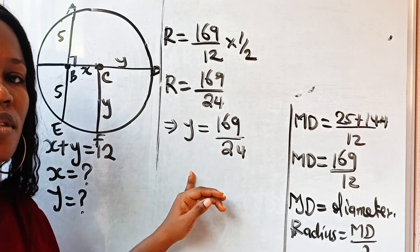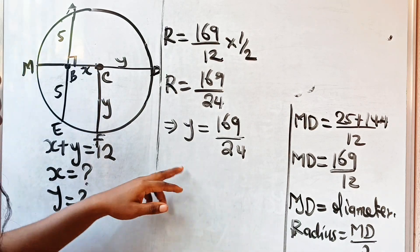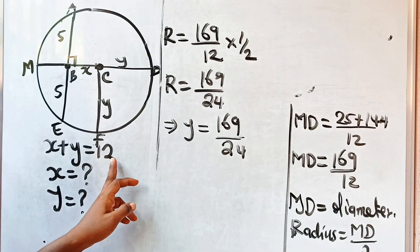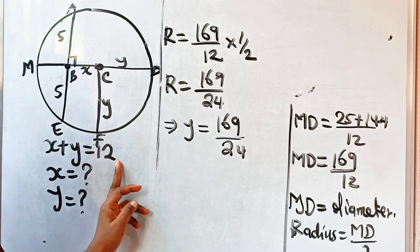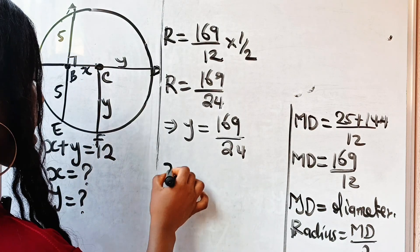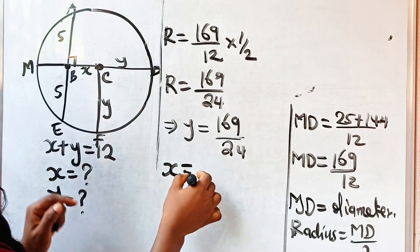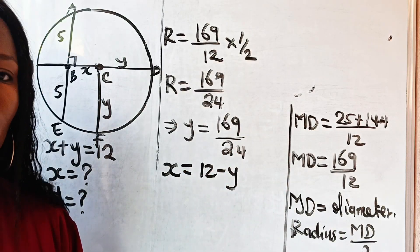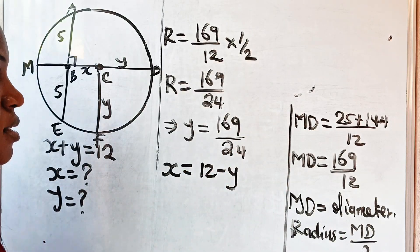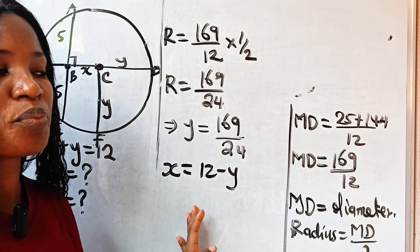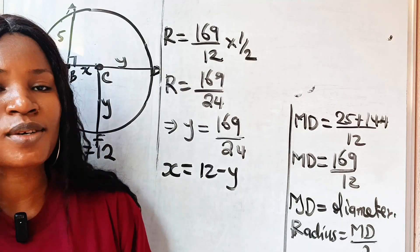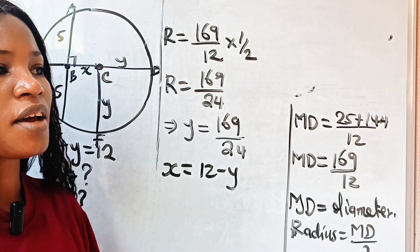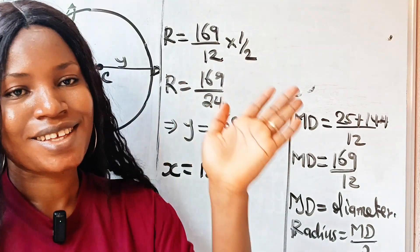We've already solved for x before. You can get x by subtracting y from 12, so x equals 12 minus y, which gives 119 over 24 — just like we got using the other method. Thank you for watching.